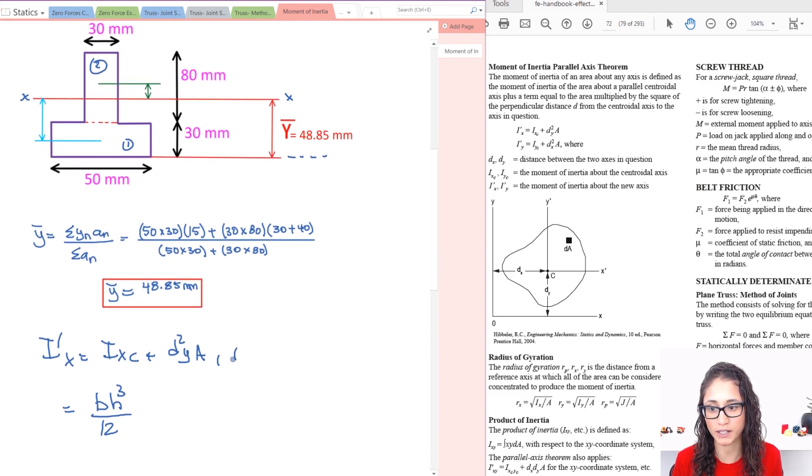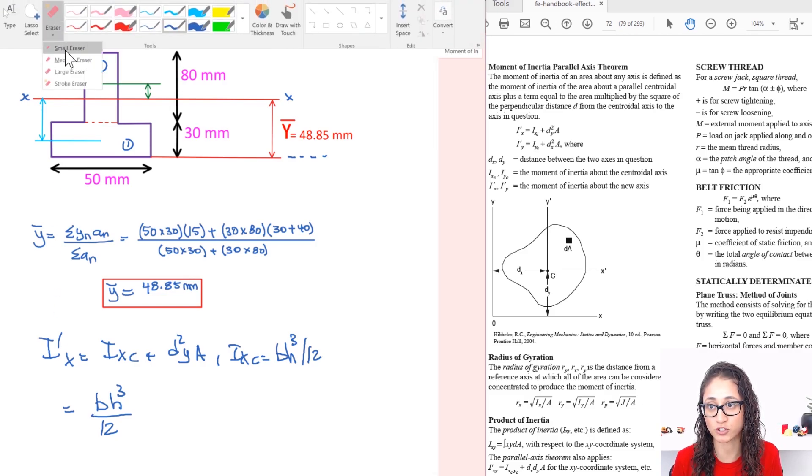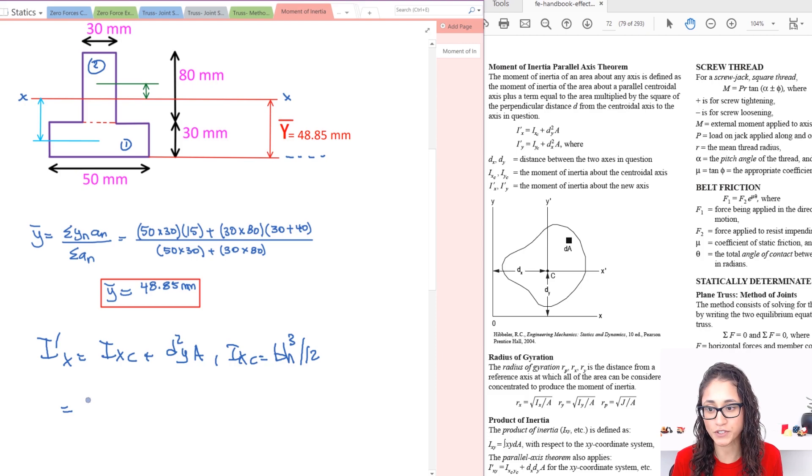So just keep in mind the bh cubed over 12. I'm just going to actually write it here. So I have i-x is equal to bh cubed over 12. This is for moment of inertia for a rectangular shape, and then here I'm just going to plug in the numbers so we go a little bit faster. So b is 15, h is 30 because that's my height, that's h. The h is the cubed one, so just be careful.